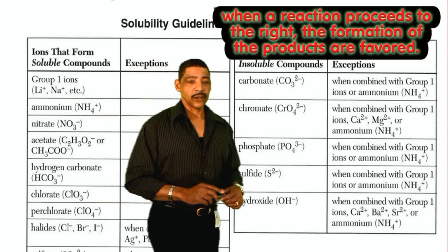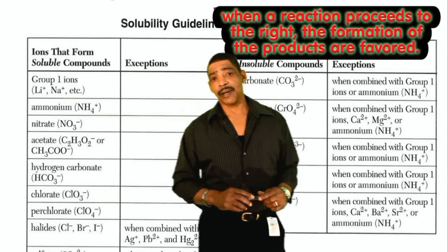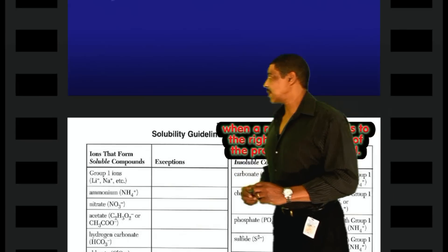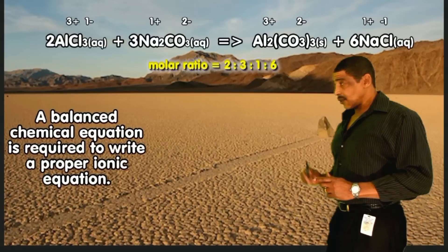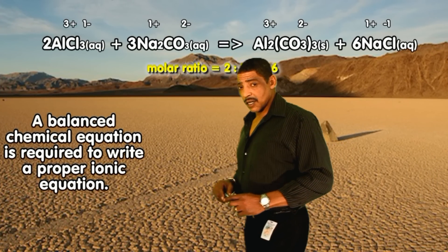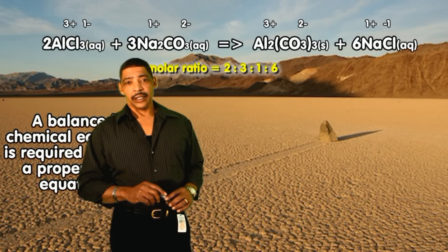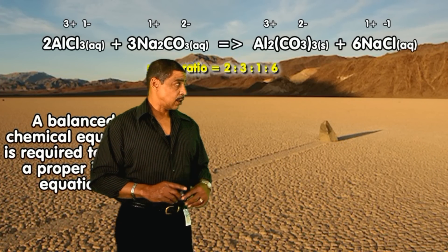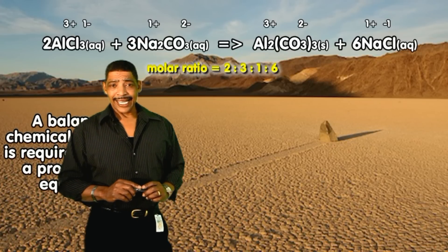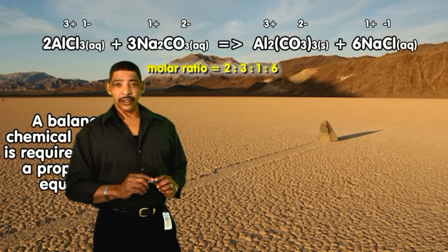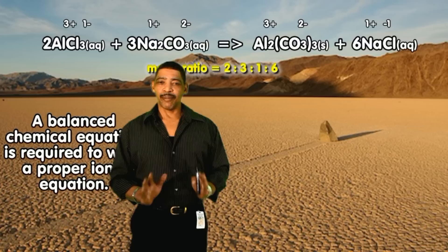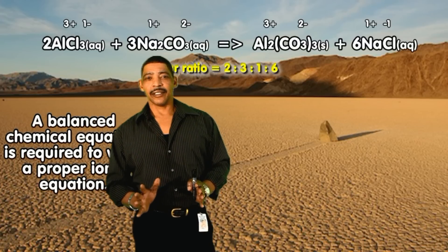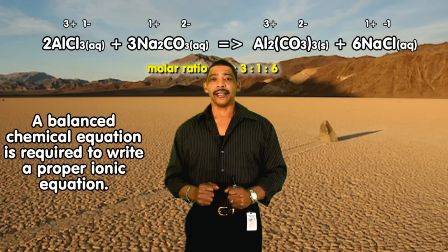The next step is to balance the equation. We place a 2 in front of aluminum chloride, a 3 in front of sodium carbonate, a 1 in front of aluminum carbonate, and a 6 in front of sodium chloride. Now that we have a balanced equation it is possible to write the ionic equation.